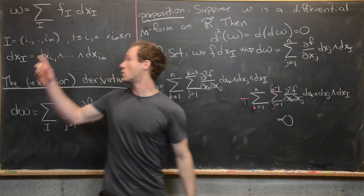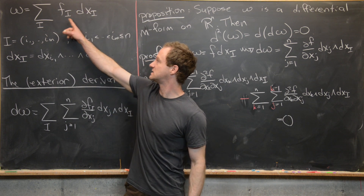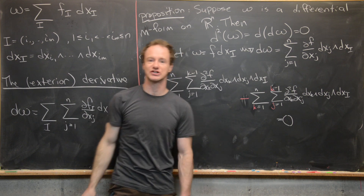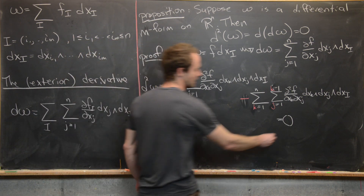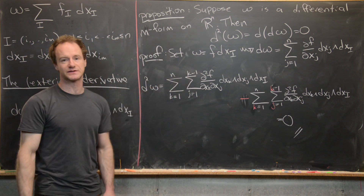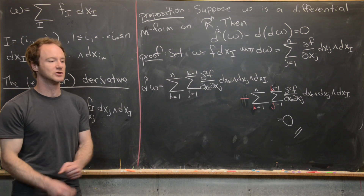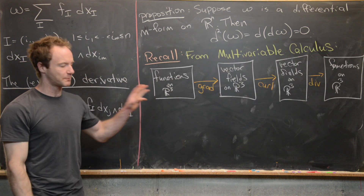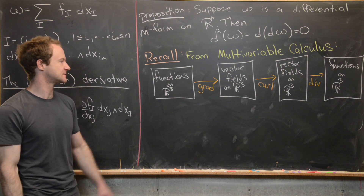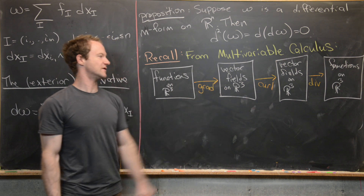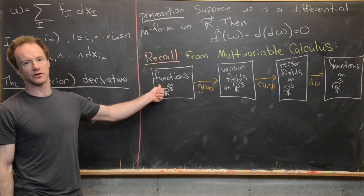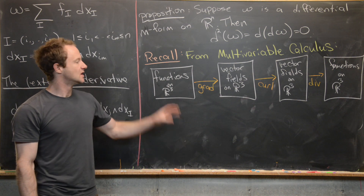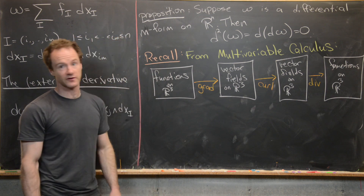For a more general differential m-form written as the full sum, the derivative passes inside the sum twice and everything cancels just as shown. This completes the proof of the proposition. Now let's relate this to multivariable calculus. On R^3, there is a sequence: starting with functions, taking the gradient gives a vector field; taking the curl of a vector field gives another vector field; and taking the divergence of a vector field gives a function. This corresponds to a 0-form, 1-form, 2-form, and 3-form on R^3.